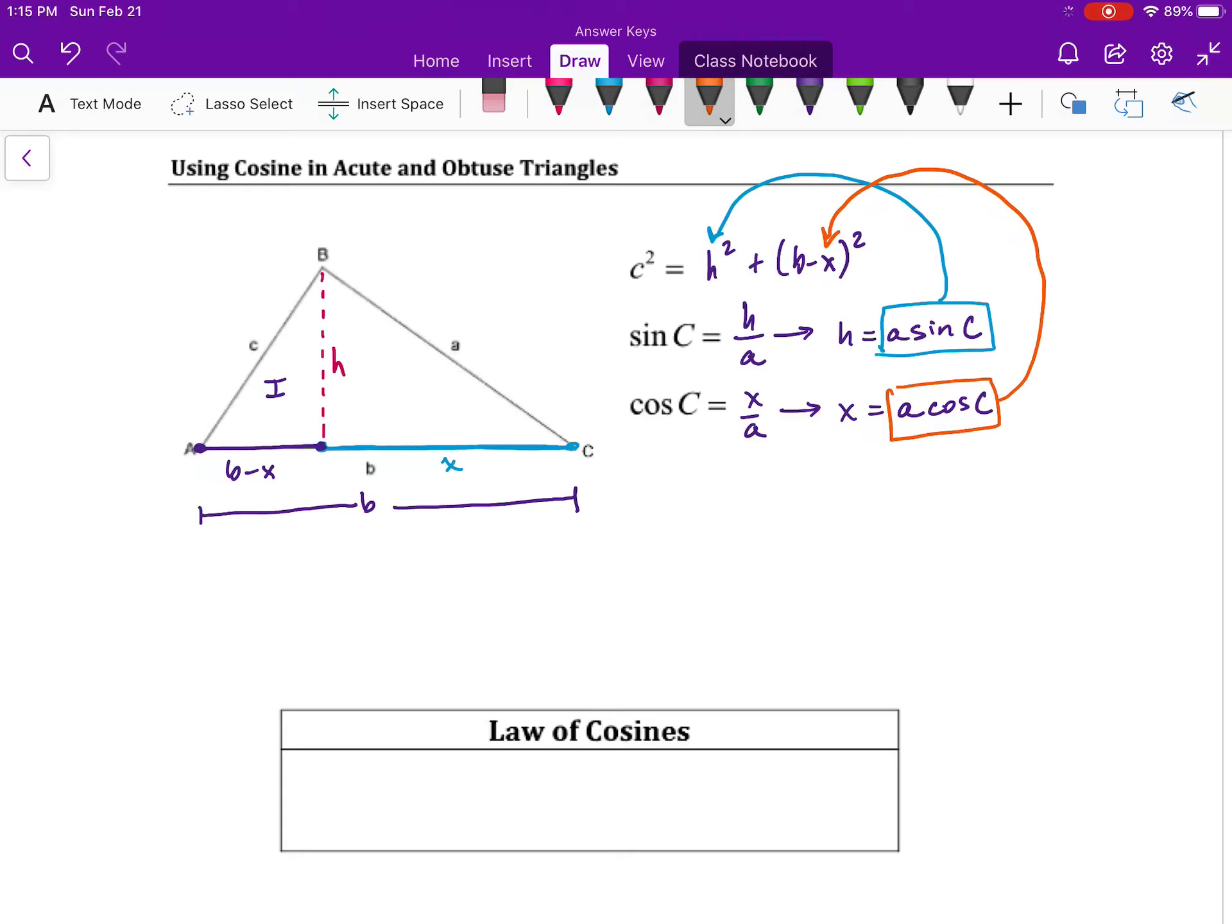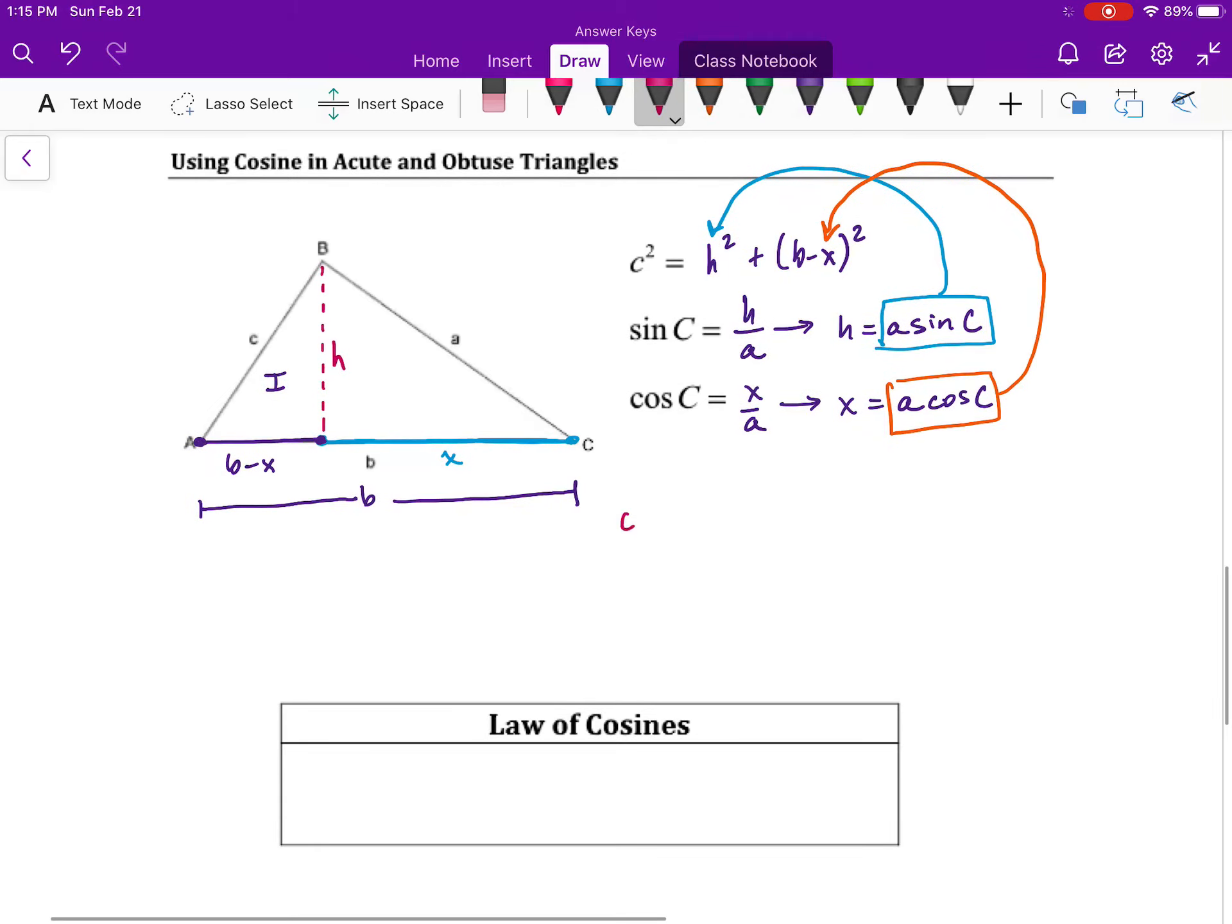And so now with this substitution, we're going to rewrite our Pythagorean theorem. C squared is equal to A sine C squared plus B minus A cosine C squared. We're going to spend a little time simplifying this and trying to get it into a neater format. If you want to pause and square these things out and see if there's anything you can do to simplify, you could try that.